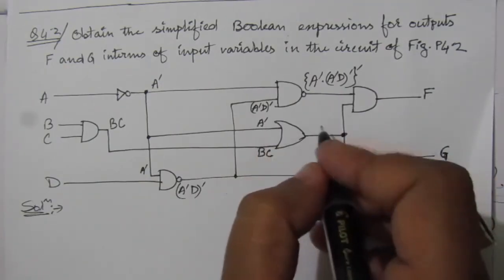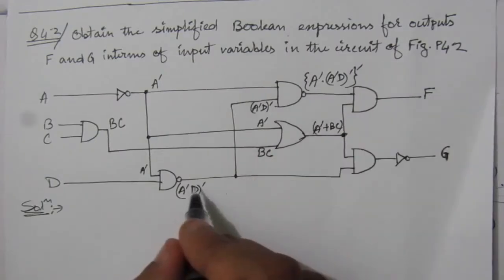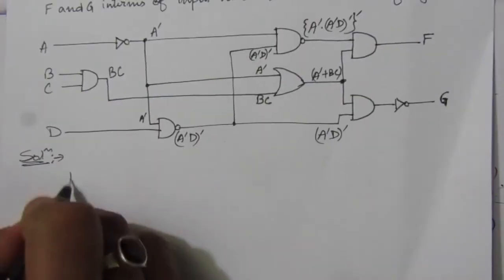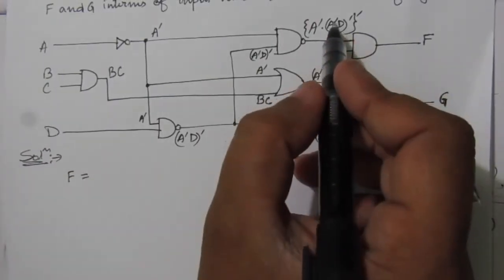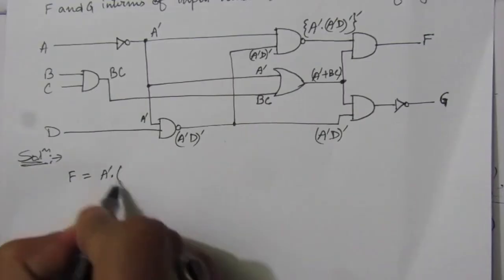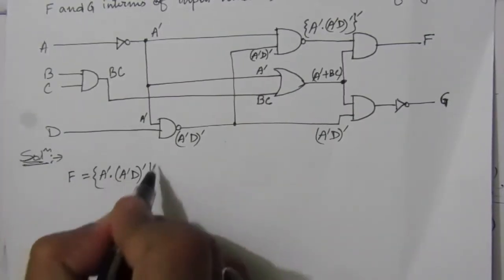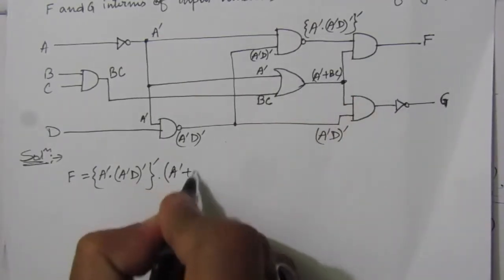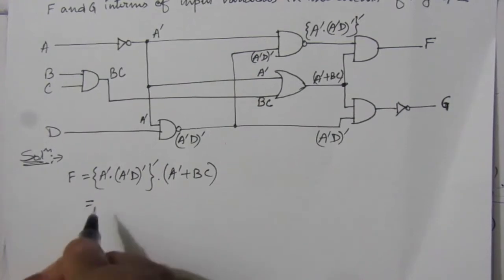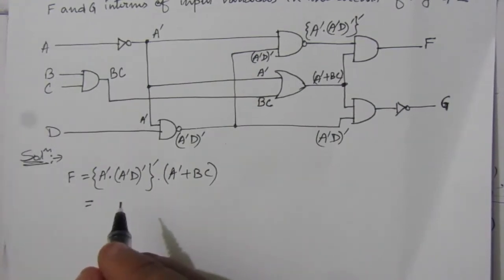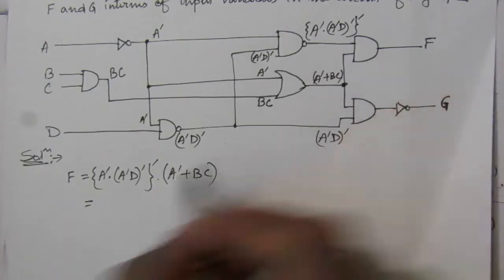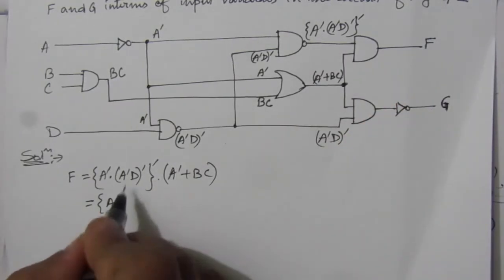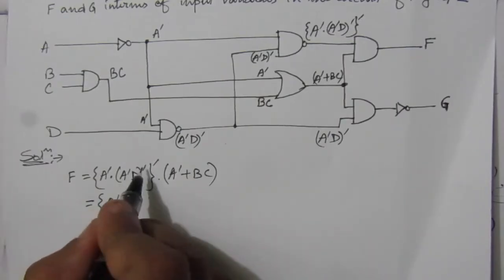Now let us write down F. F equals the product of (A-bar · (A-bar · D)-bar)-bar multiplied by (A-bar + B·C). We have to simplify this boolean expression for output F. The term (A-bar · D)-bar is in the form (A·B)-bar, so by De Morgan's theorem we can write it as A-bar-bar + D-bar, which gives A + D-bar.